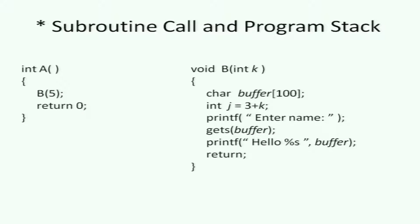Here is a simple example: function A and function B. Integer A is the name of function A; it calls subroutine B and returns the value 0. B has a character buffer of 100, integer J equals 3 plus K, etc. The question is: A is the calling program and B is the called program — what does the organization of the stack look like when you execute a program like this?